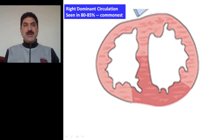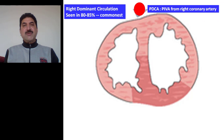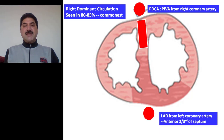Let us first go to the right dominant circulation. This is the most common type of coronary circulation, seen in 80 to 85% of individuals. In this type of circulation, the posterior interventricular branch is given by the right coronary artery. The posterior interventricular artery, also called the posterior descending coronary artery, arises from the right coronary artery and gives septal branches which supply the posterior one third of the septum. From the left anterior descending coronary artery, septal branches arise and perforate the septum, supplying the anterior two thirds of the septum.